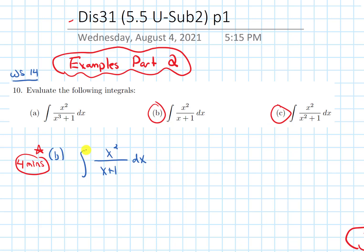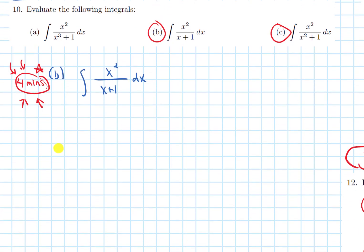So B has this integral of x squared over x plus 1 dx. First, I want to give you four minutes to try this. Pause the video in four, three, two, one. Pause it and try it for about four minutes. All right, so hopefully you did that. Hopefully you paused it and tried it for about four minutes.